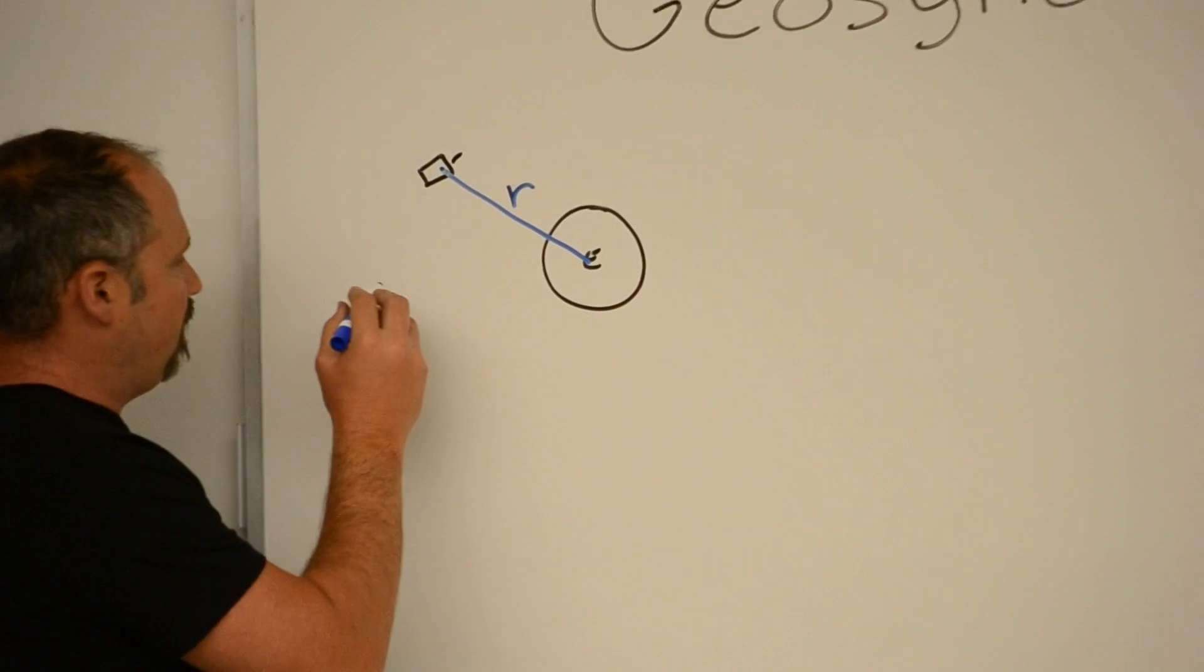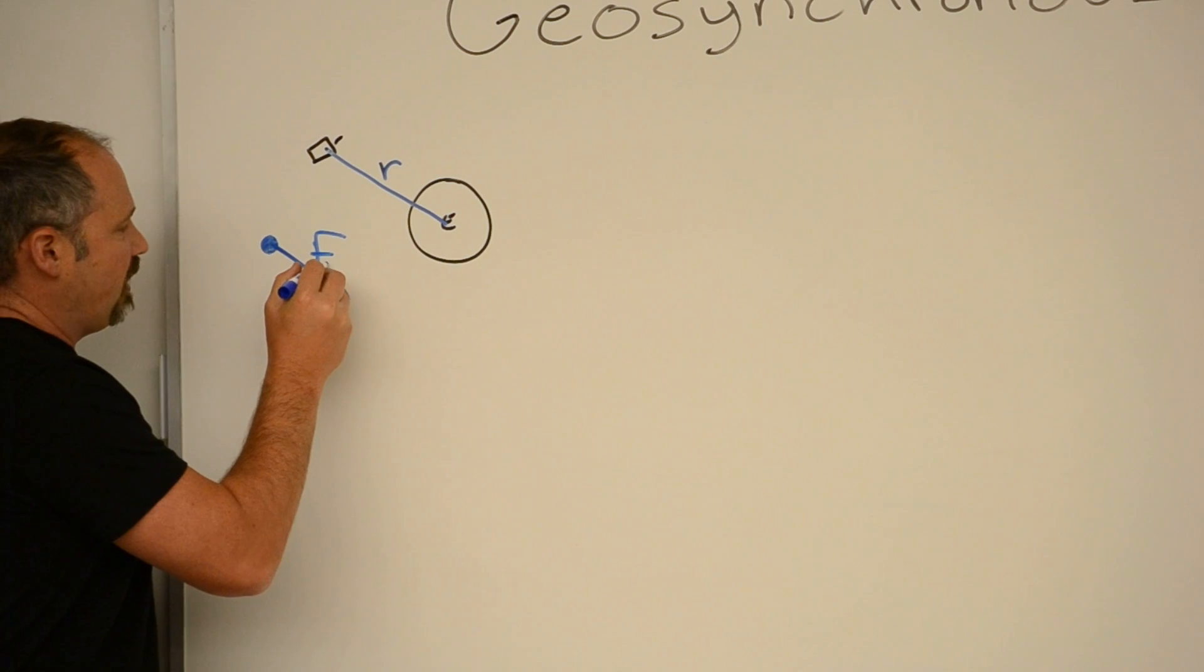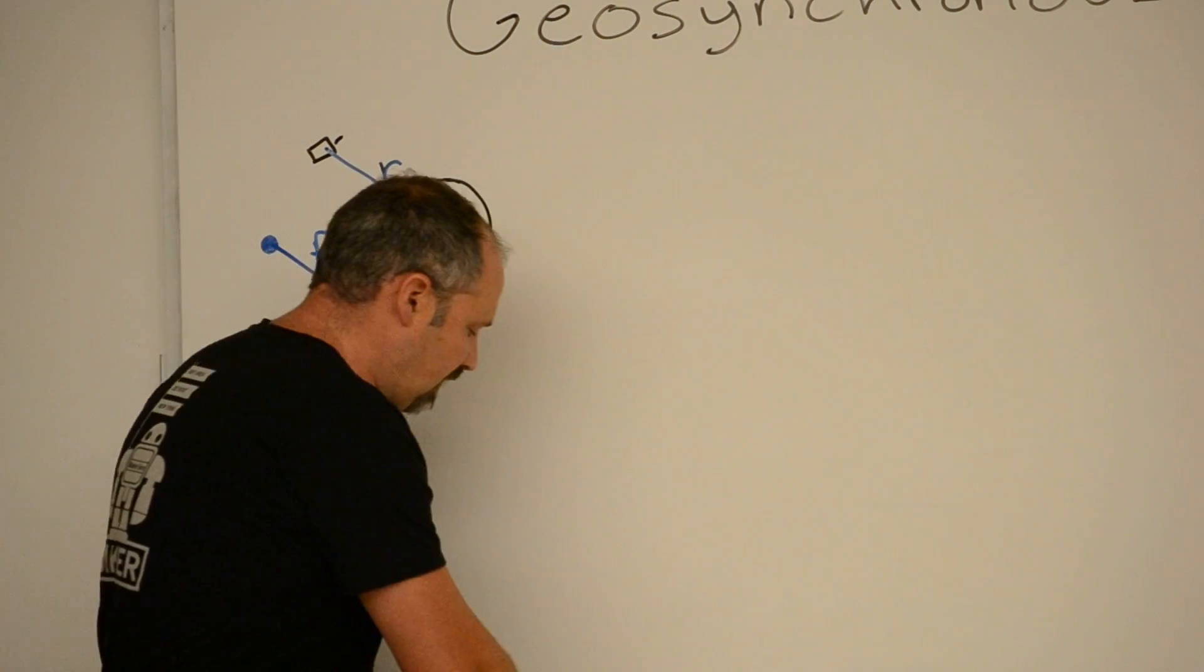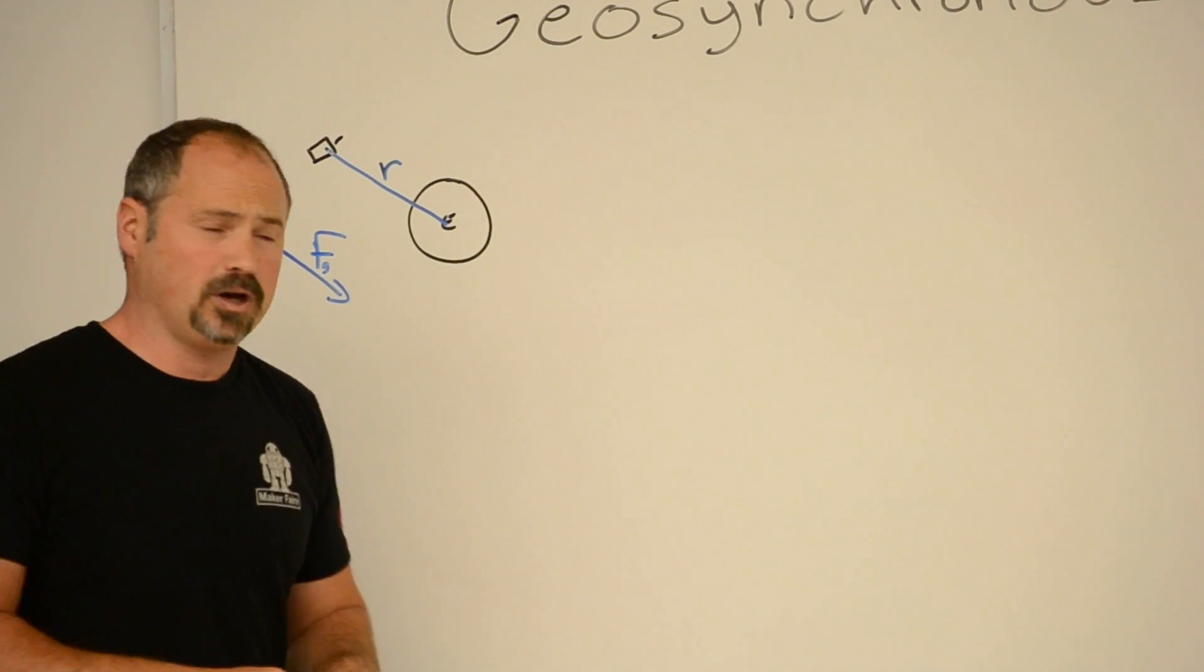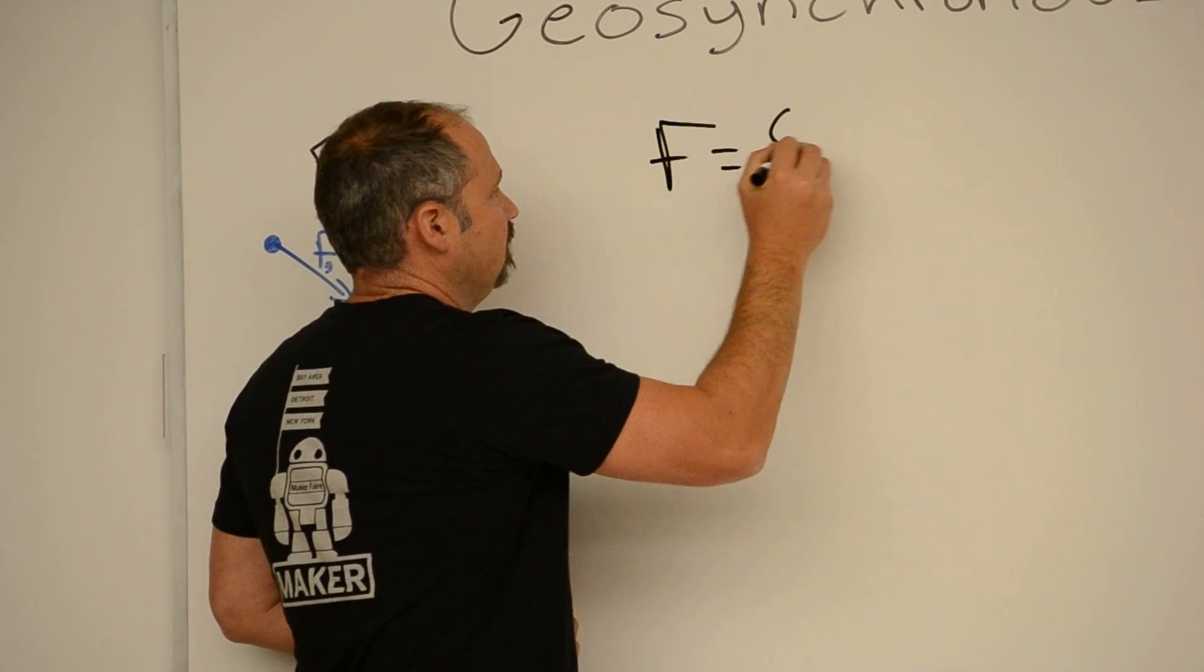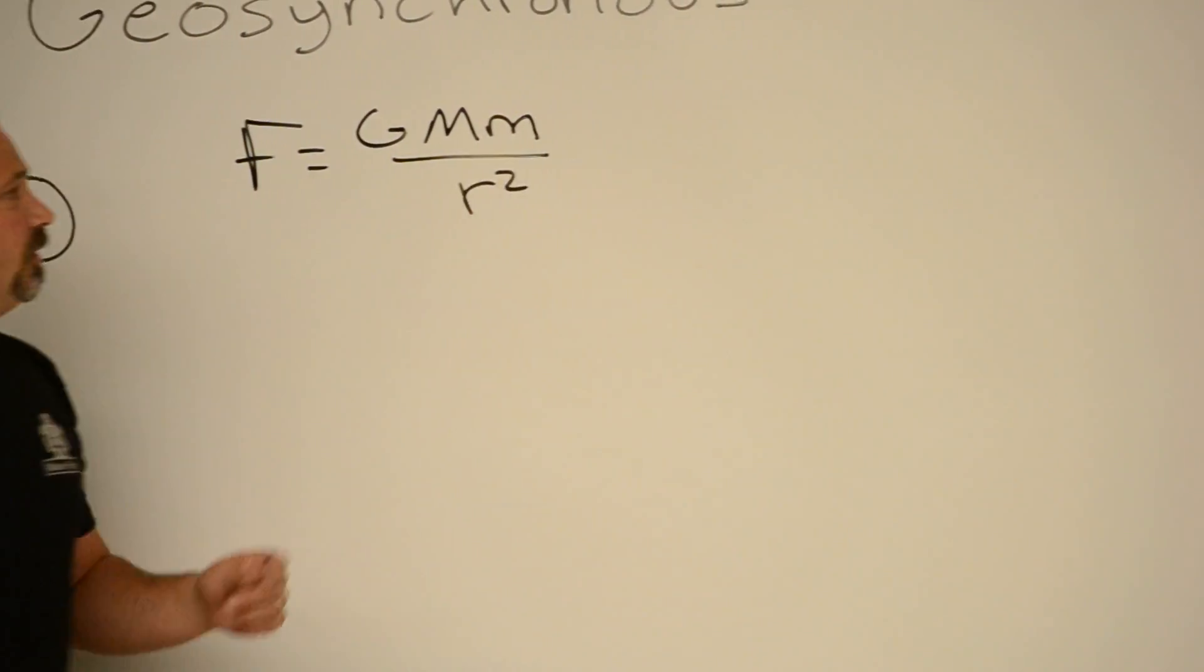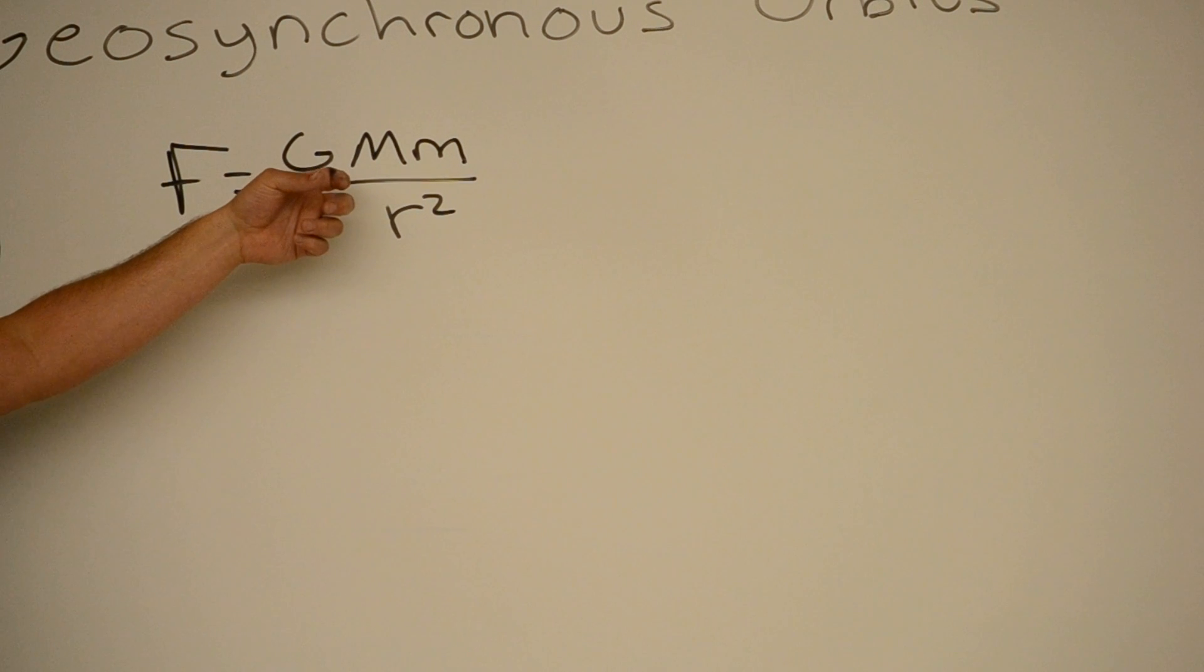And if we draw the free body diagram, well, there's only one force acting on Bender, and that's the force of gravity. So because Bender is far from the surface of Earth, we need to use Newton's universal law of gravity. And that is equal to GMm over r squared, where this is the universal constant of gravity. The big M is the mass of Earth. The little m is the mass of Bender. And r, again, is the distance between the two objects.